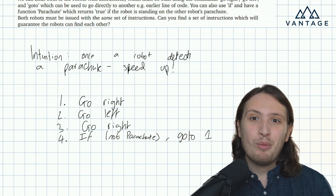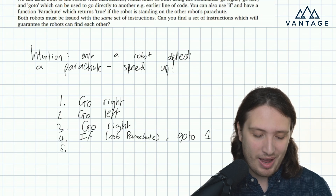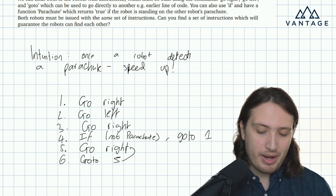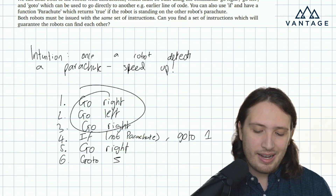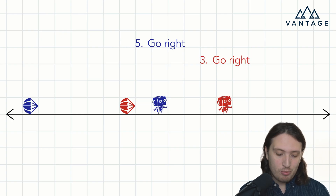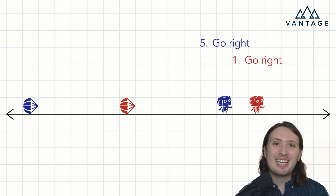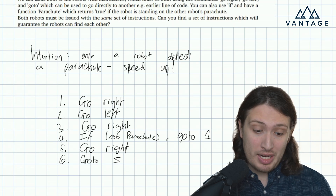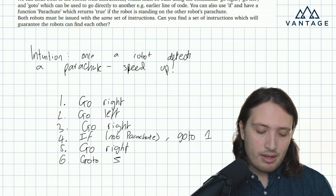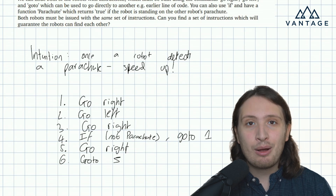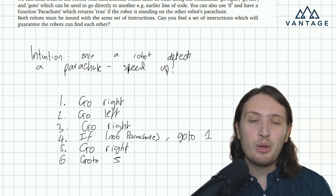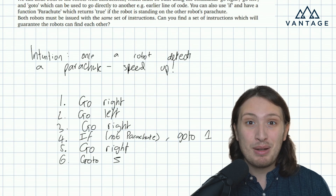Once the robot has found the parachute, we just want it to go faster to the right. So the next block is simply: go right, then go to line five — just keep going right, going right, no longer artificially staggered with a go left. The robot that manages to do this is the one that started to the left, and it will catch up. This is not too hard a problem, and it's a nice taste of what you can expect from these more algorithmic interview questions. There are lots of other ways you could implement the idea, but it's so helpful in algorithm design questions to always start with the intuition, and share your intuition with the interviewer before getting bogged down trying to implement code.